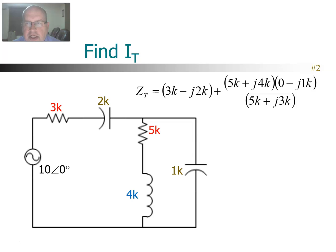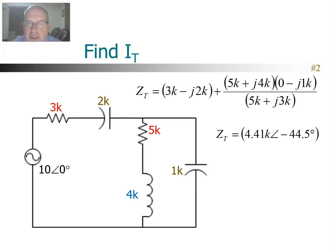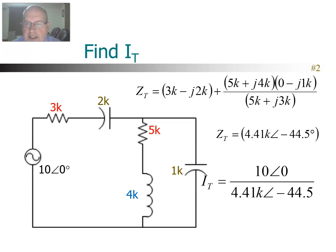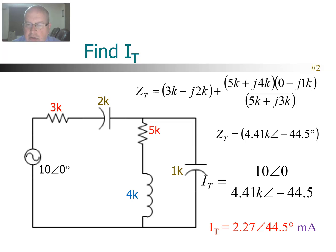I'm going to do the addition of those two in my head: 5K + 0 gives me 5K, and 4K − 1K gives me +3K. Now I do the rest in the calculator, and I get a total Z of 4.41K at an angle of −44.5. Now that I have the total Z, I can use Ohm's Law. The voltage is 10 ∠0. Dividing by the Z I just found, I get a current of 2.27 milliamps at angle 44.5 degrees. So that's the total current in this circuit.